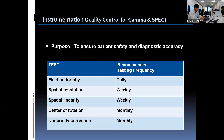Let's look at the table. Field uniformity is done daily, and spatial resolution and linearity are tested weekly, and center of rotation and uniformity correction are done monthly. However, testing frequency can vary depending on the manufacturer's recommendation or institution policy. Because of the improvement of technology in clinical imaging equipment, test frequency can be reduced.